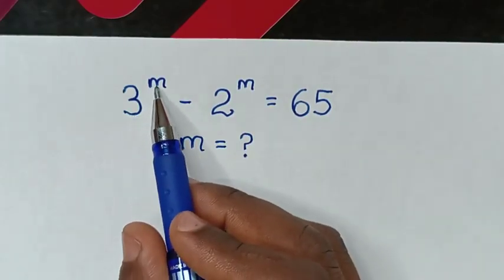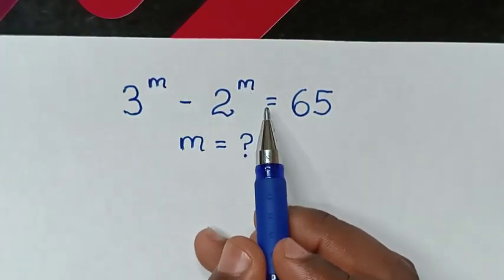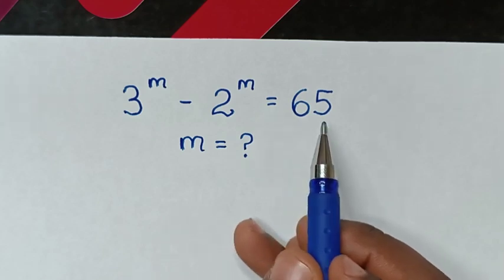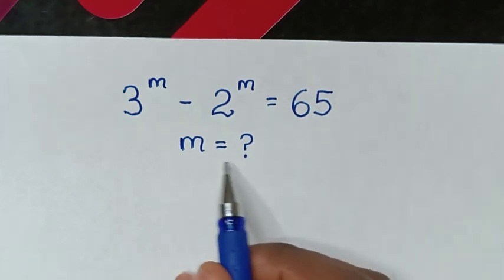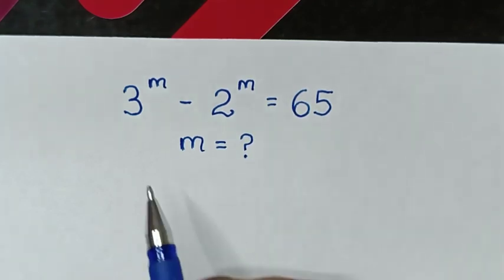How to solve 3 power of m minus 2 power of m is equal to 65? We find the value of m from this equation.